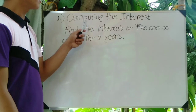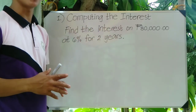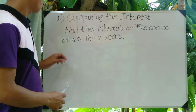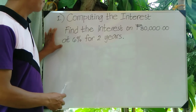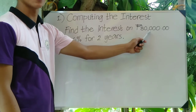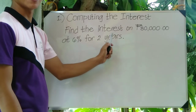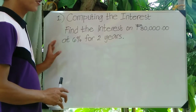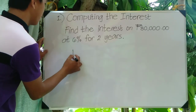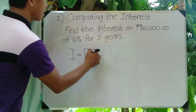For problem number one, we are computing the interest. In computing the interest, we will follow the same formula: I equals P times R times T. We have here an example problem: find the interest on 80,000 pesos at 6% for two years.